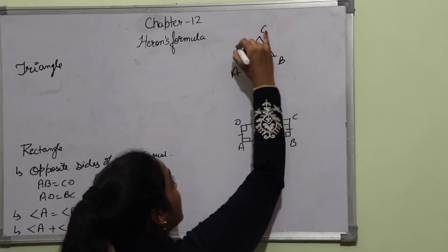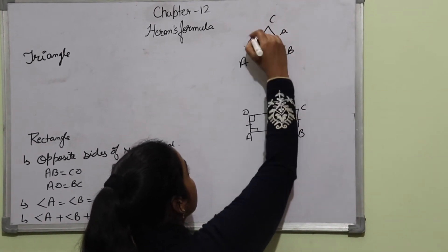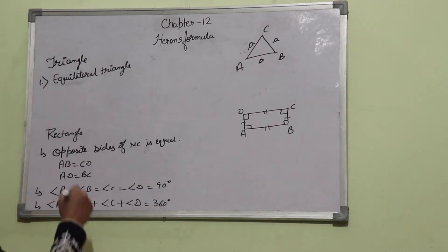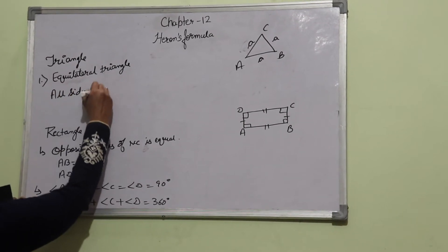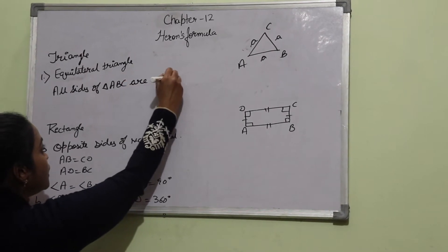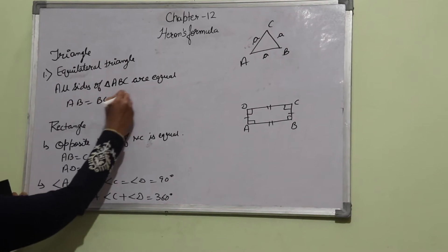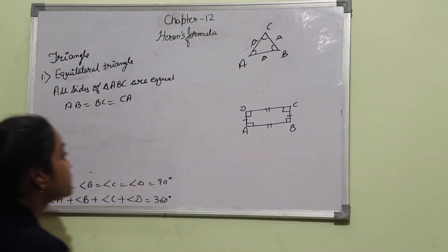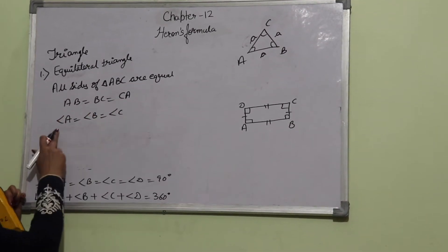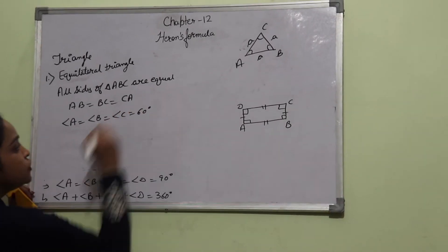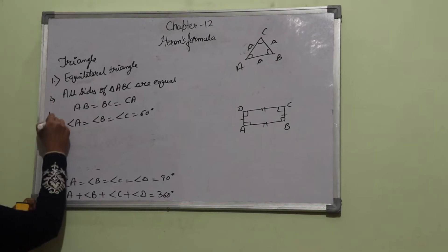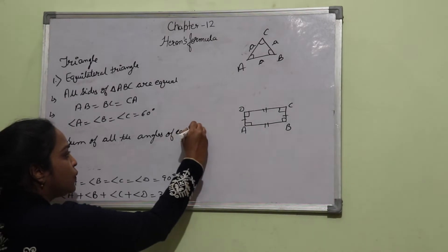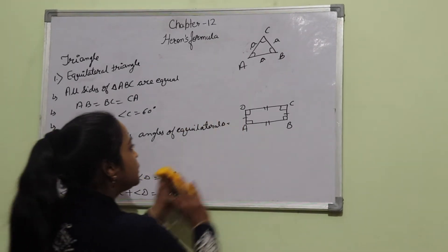This is equilateral triangle ABC. In this, AB, BC, and CA — all sides are equal. That means AB is equal to BC is equal to CA. Each angle is equal to 60 degrees — angle A, angle B, angle C are all equal to 60 degrees. And the sum of all the angles of the equilateral triangle is equal to 180 degrees.